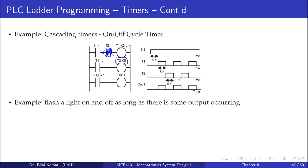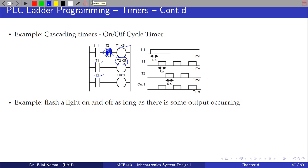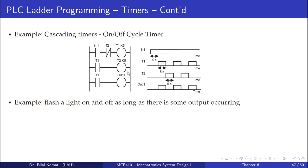After T2 finishes, T1 will be activated again after 5 seconds, and this cycle keeps repeating until we stop it. Timer 1 activates Timer 2, and once Timer 2 is off it re-activates Timer 1, causing the output to keep blinking. We can change the light to any output, and this completes the timer cascade example.